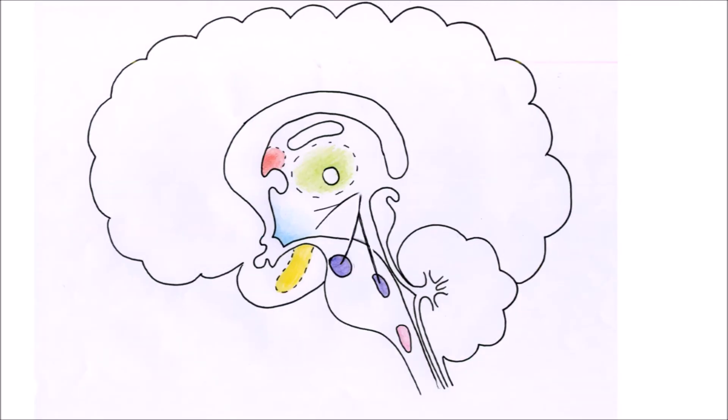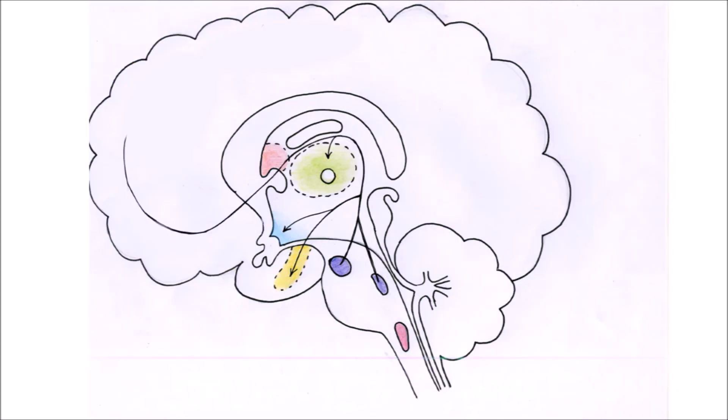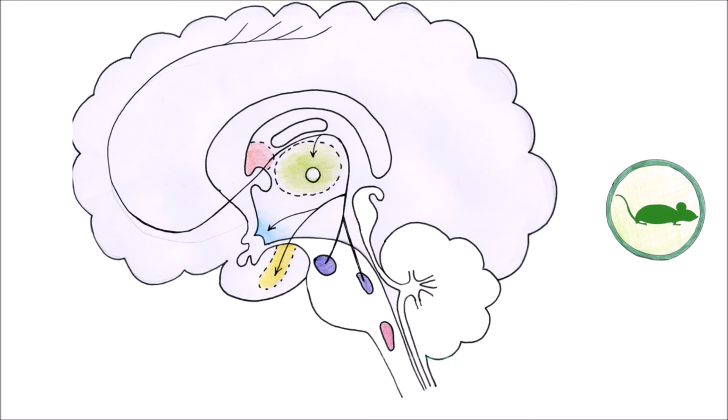In any case, deactivating the raphe area in the brainstem can result in a state of synthetic torpor in non-hibernating animals like rats. This increases the likelihood that this technique can also work in humans, though it is still necessary to investigate how exactly this could be implemented.